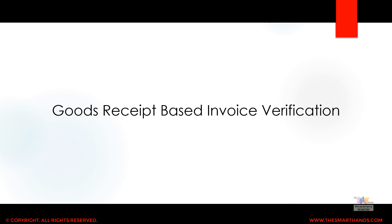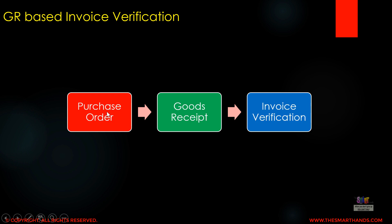Let us start with goods receipt based invoice verification. As we have seen in previous videos, we first create a purchase order, then perform a goods receipt, and finally do the invoice verification. This is a three-step process, also known as the standard three-step invoice verification process, and it is the most commonly used.